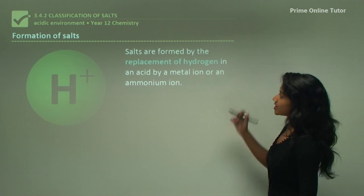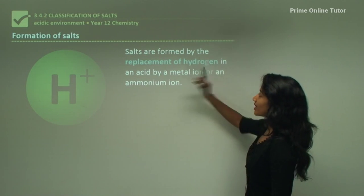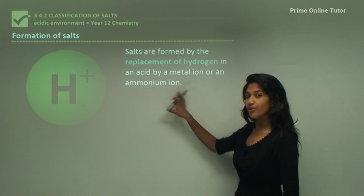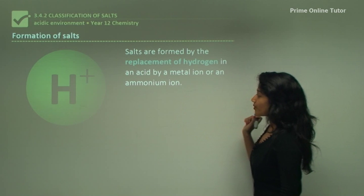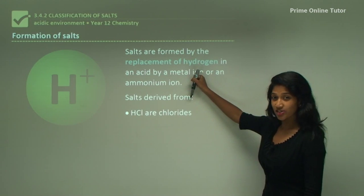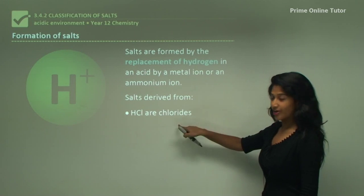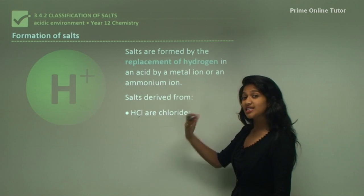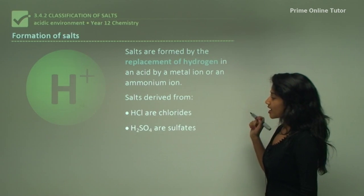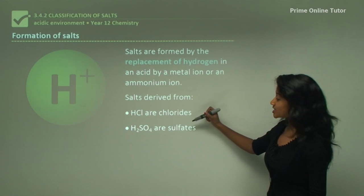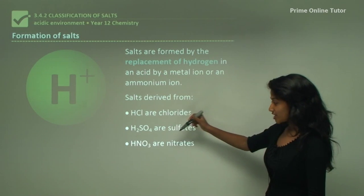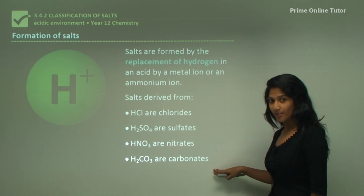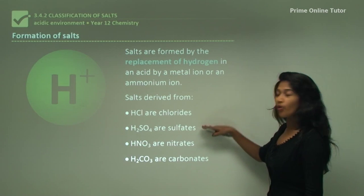Now, the formation of salts. Salts are formed by the replacement of hydrogen in an acid by a metal ion or an ammonium ion. So a salt derived from HCl gives chlorides, from sulfuric acid gives sulfates, from nitric acid gives nitrates, and from carbonic acid gives carbonates.